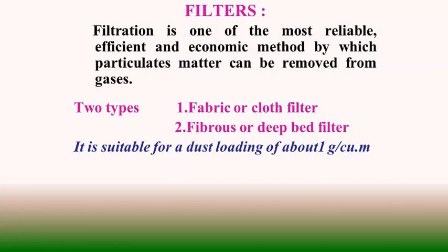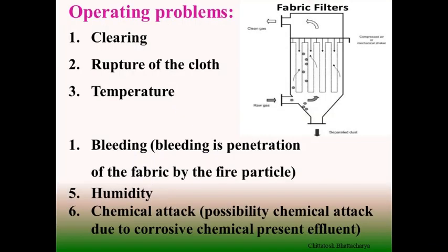Filters are another type of dust separating system. Filtration is one of the most reliable, efficient, and economic methods for separating particulate matters from dust-laden gas. There are two types: fabric or cloth filters, and fibrous or deep bed filters. Filters are suitable for a dust loading of about 1 gram per cubic meter; at higher loading it may affect filter performance. Major operating problems include clearing accumulated dust, rupture of cloths, burn-out at high temperature, bleeding — which is penetration of the fabric by fine particles — humidity changes, and possible chemical attack from corrosive chemicals in the effluent.